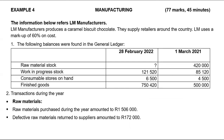Consumable stores on hand at the beginning of the year will be $6,500 and at the end of the year will also be $6,500. Consumable stores on hand will be recorded in factory overheads. In the factory overheads account we are going to add the opening balance and subtract the closing balance of $6,500, because there are things in between I need to take into account.